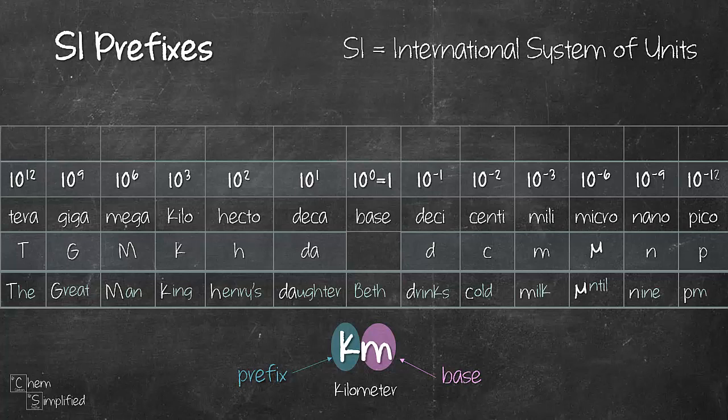I've worked off from the abbreviation for each of the prefixes starting from terra all the way to pico. As for the numbers on the exponent we will start off with 0 for base and then 1, 2, 3, 6, 9, 12 on each side.